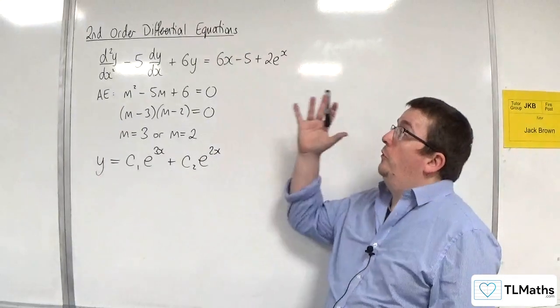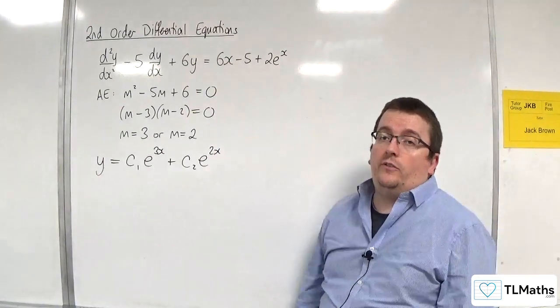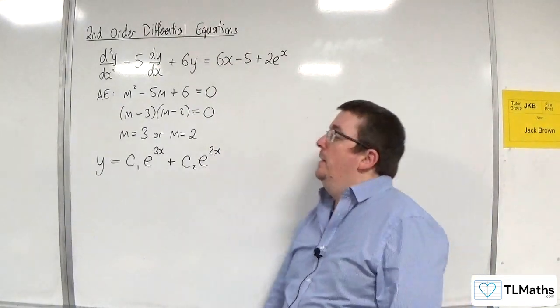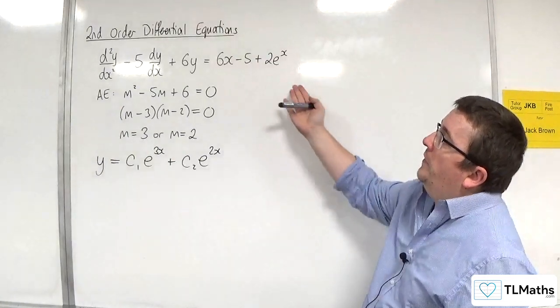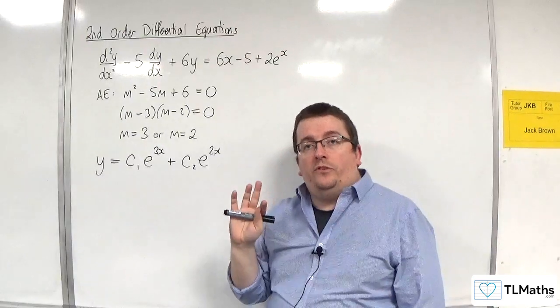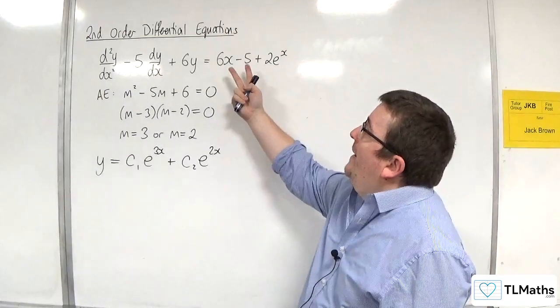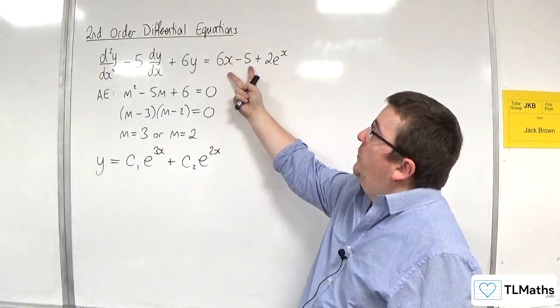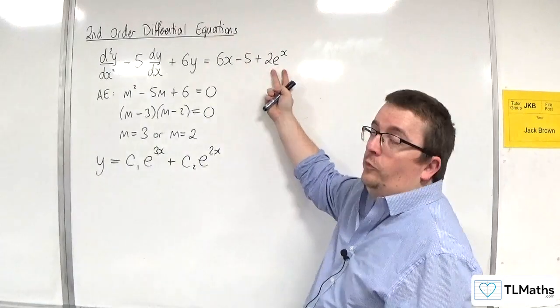A few videos ago we solved the homogeneous case for this differential equation, so now we're looking at the right hand side. In this case, we've actually got two different types of function: we've got a linear function, the 6x take away 5, and we've got an exponential function.